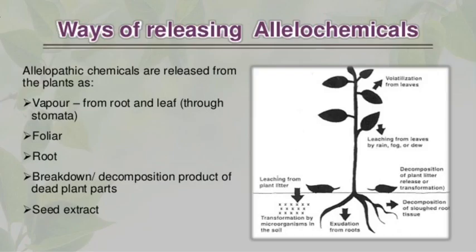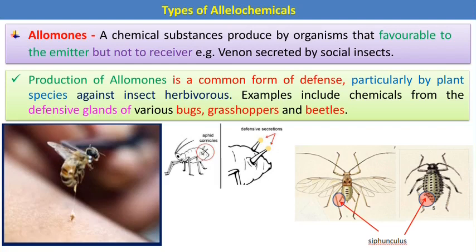These are the different ways allelochemicals are released from plants: vapor from roots and leaves through stomata, foliar release, root release, breakdown and decomposition products of dead plant parts, and seed extracts.